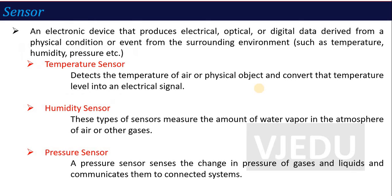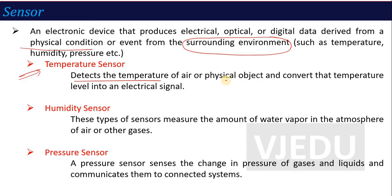Next is sensor. A sensor is an electronic device that produces electrical, optical, and digital data derived from a physical condition or event. Simply, a physical event or physical change in your surrounding environment — temperature can change, pressure can change, liquid level can change — these things are converted to your electrical output signal. There are different types of sensor. A temperature sensor detects the temperature of air or a physical object and converts the temperature level into an electrical signal. A humidity sensor measures the amount of water vapor in the atmosphere of air or other gases.